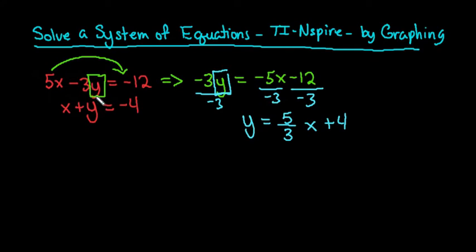Our second equation, we would have to just simply get y by itself. This one's nice and easy, because when I move x to the other side, we have y equals negative x minus 4, and we can see that y is already by itself.